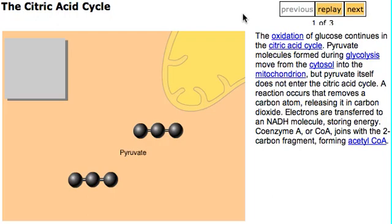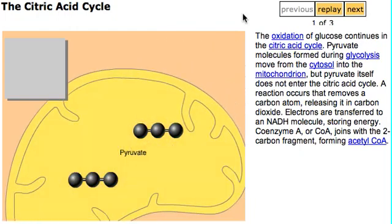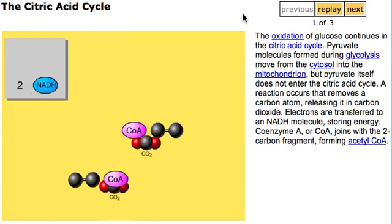The oxidation of glucose continues in the citric acid cycle. Pyruvate molecules formed during glycolysis diffuse from the cytosol into the mitochondria, but pyruvate itself does not enter the citric acid cycle. A reaction occurs that removes a carbon atom, releasing it as carbon dioxide.